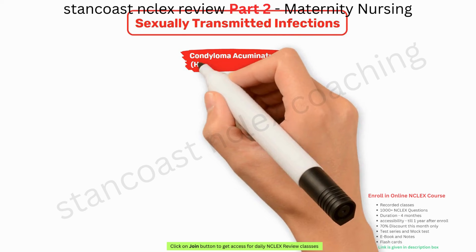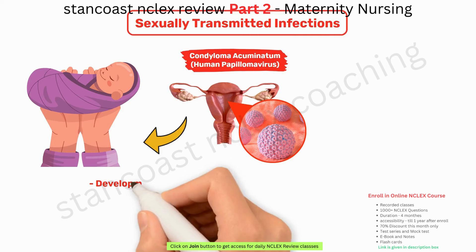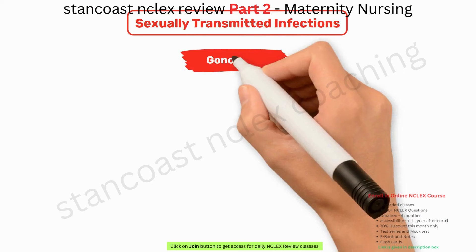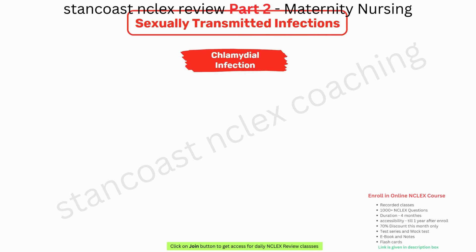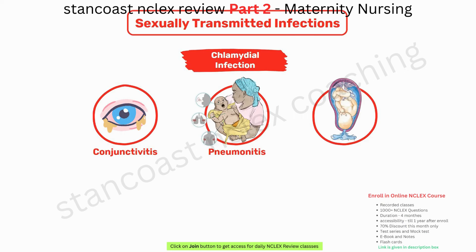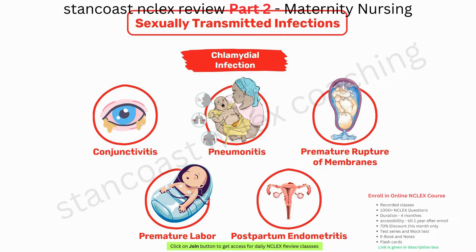Condyloma acuminatum (human papillomavirus) can be transmitted during vaginal childbirth, fostering the development of epithelial tumors in the mucous membranes of the larynx in infants. Gonorrhea has the potential to infect the neonate at birth, giving rise to ophthalmia neonatorum, pneumonia, and sepsis. Chlamydial infection, when transmitted during vaginal delivery, can precipitate neonatal conjunctivitis, pneumonitis, premature rupture of membranes, premature labor, and postpartum endometritis. Trichomonas has been associated with premature rupture of membranes and postpartum endometritis.